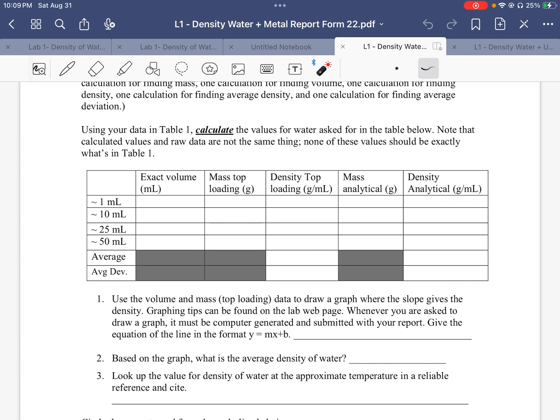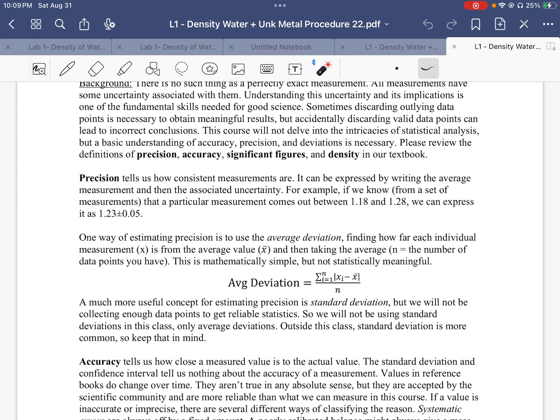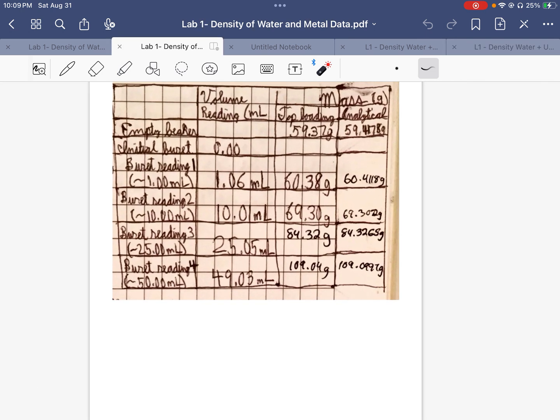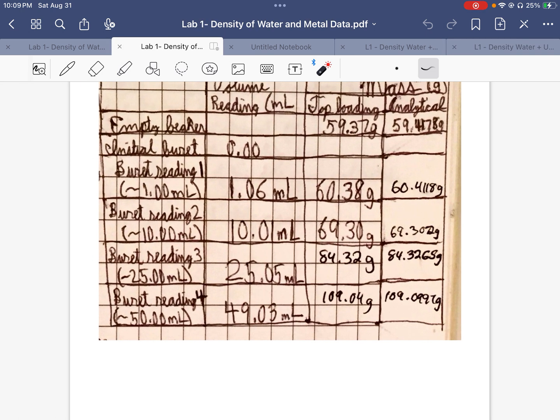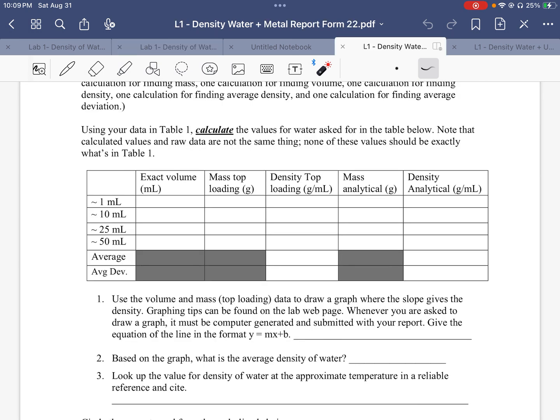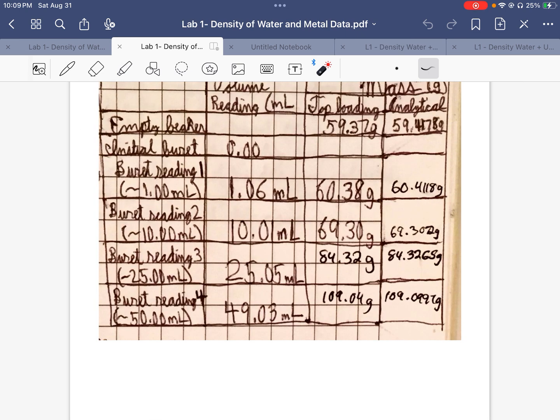So what that means, I'm going to show you my data that I have. And here's the data that I have. And what that means is when we look at this table, the exact volume that we see here for one mil means that we have to go to our data table.